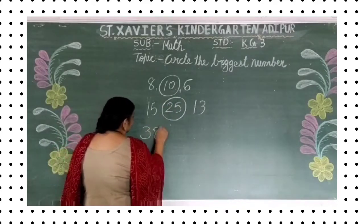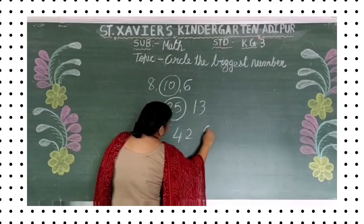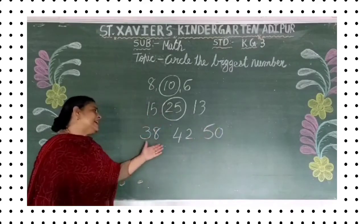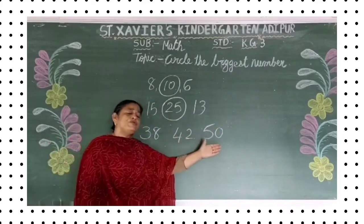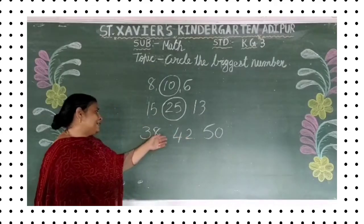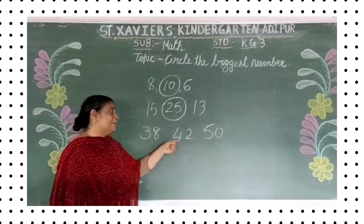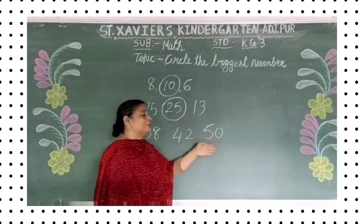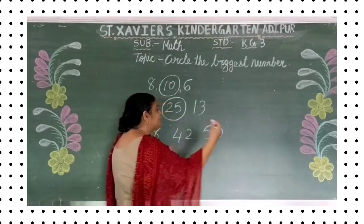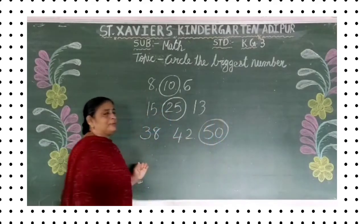Now, 38, 42, 50. Three se bada hai four — forty-two. Aur 42 se bada kaunsa hai? Five, zero — fifty. Toh wahan peh aapko circle karna hai — fifty.